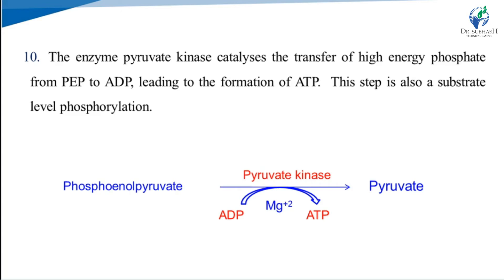In the final step, the enzyme pyruvate kinase catalyzes the conversion of phosphoenolpyruvate to pyruvate. ADP is converted to ATP, so one ATP is formed in this step. This is also an example of substrate-level phosphorylation.